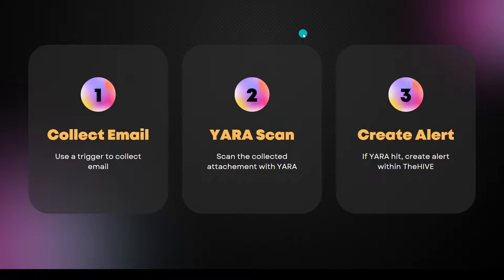So a little bit of how this flow is going to go: we are first going to collect our email using a trigger within Shuffle. We're then going to scan it with Yara - specifically we are going to scan attachments that come with emails. And then if there is a Yara hit, we're going to create an alert within TheHive so that our SOC team can know we have received an email with a malicious attachment.